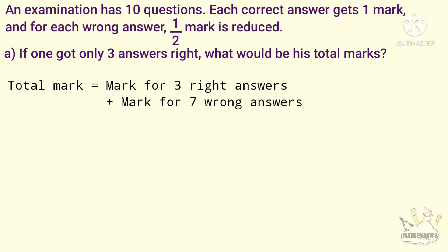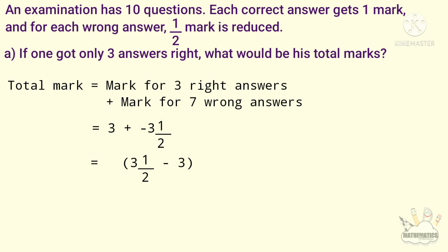Total mark is equal to mark for 3 correct answers plus mark for 7 wrong answers, that is 3 plus minus 3 and a half. Now 3 plus minus 3 and a half — the negative number is larger. Large number is 3 and a half, so 3 and a half minus 3 gives minus a half.